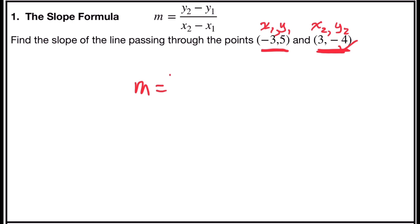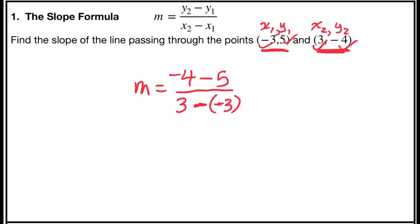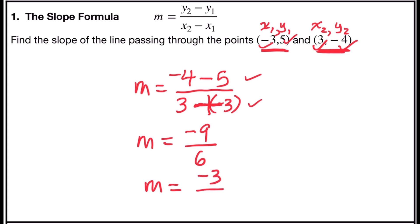I'm going to call 3, negative 4 the second point. So my second x coordinate is 3, and my second y coordinate is negative 4. And now all I have to do is substitute. Slope is equal to y sub 2, which is my second y coordinate, negative 4, minus y sub 1, my first y coordinate, which is 5, over x sub 2, my second x coordinate, which is 3, minus x sub 1, which is negative 3. I'll put that in parentheses because I have the negative from the formula and the negative from the coordinate. The opposite of a negative, or dash dash, means plus. Now I'm going to simplify. Slope is equal to negative 4 minus 5 is negative 9, and 3 plus 3 is 6. That fraction can be reduced by 3 over 3. Negative 9 divided by 3 is negative 3, and 6 divided by 3 is 2. So my slope is negative 3 over 2.